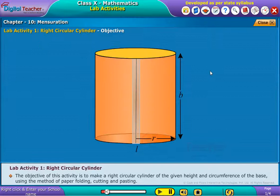The objective of this activity is to make a right circular cylinder of a given height and circumference of the base using the method of paper folding, cutting and pasting.